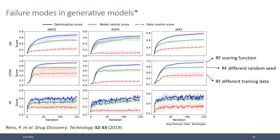They looked at several generative models and case studies, using a traditional random forest model. They optimize against one particular trained random forest — the blue line. But if you take the exact same model trained with a slightly different random seed, you see a huge gap between the predicted probability of de novo molecules. It's already optimizing towards the specific parameters of that random forest, and with a different data split you see an even larger gap.